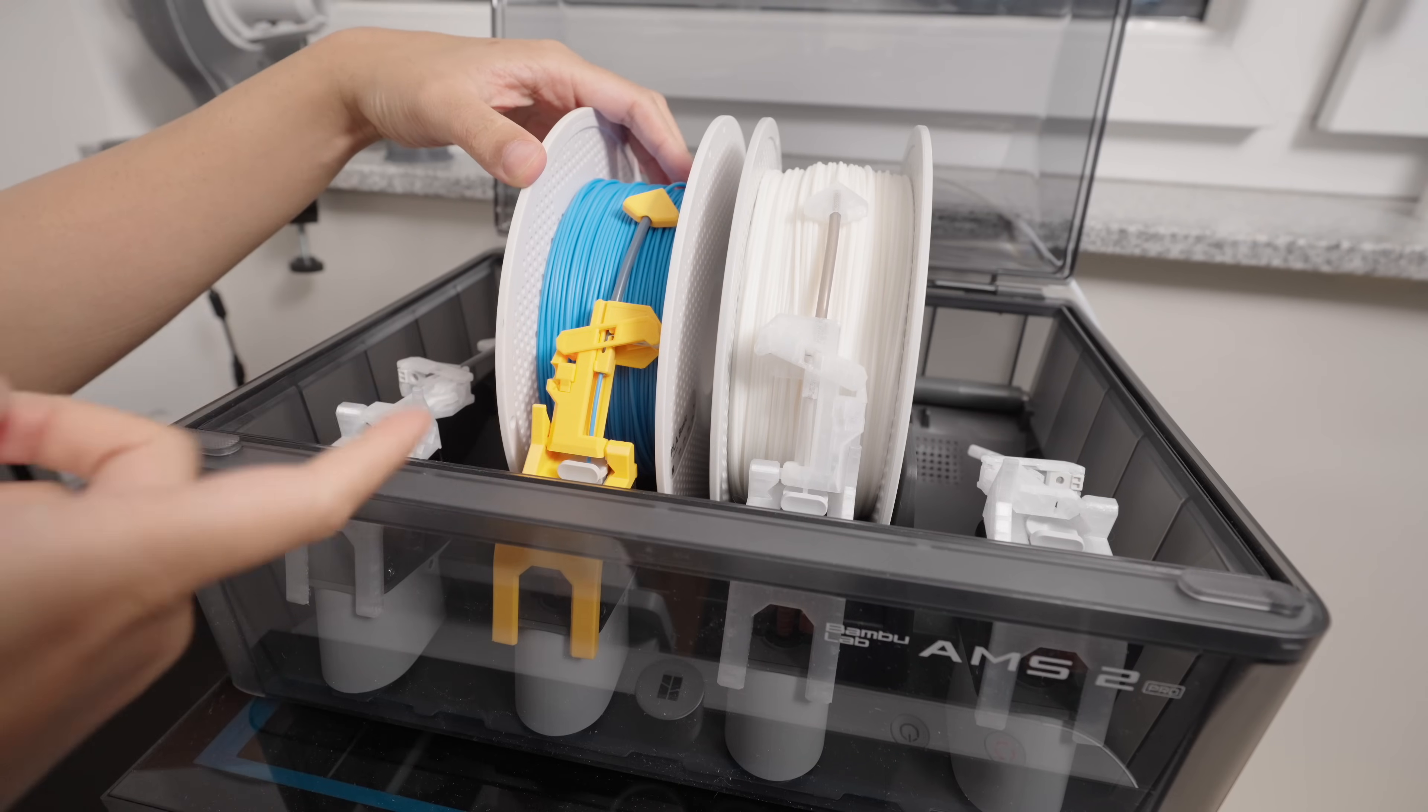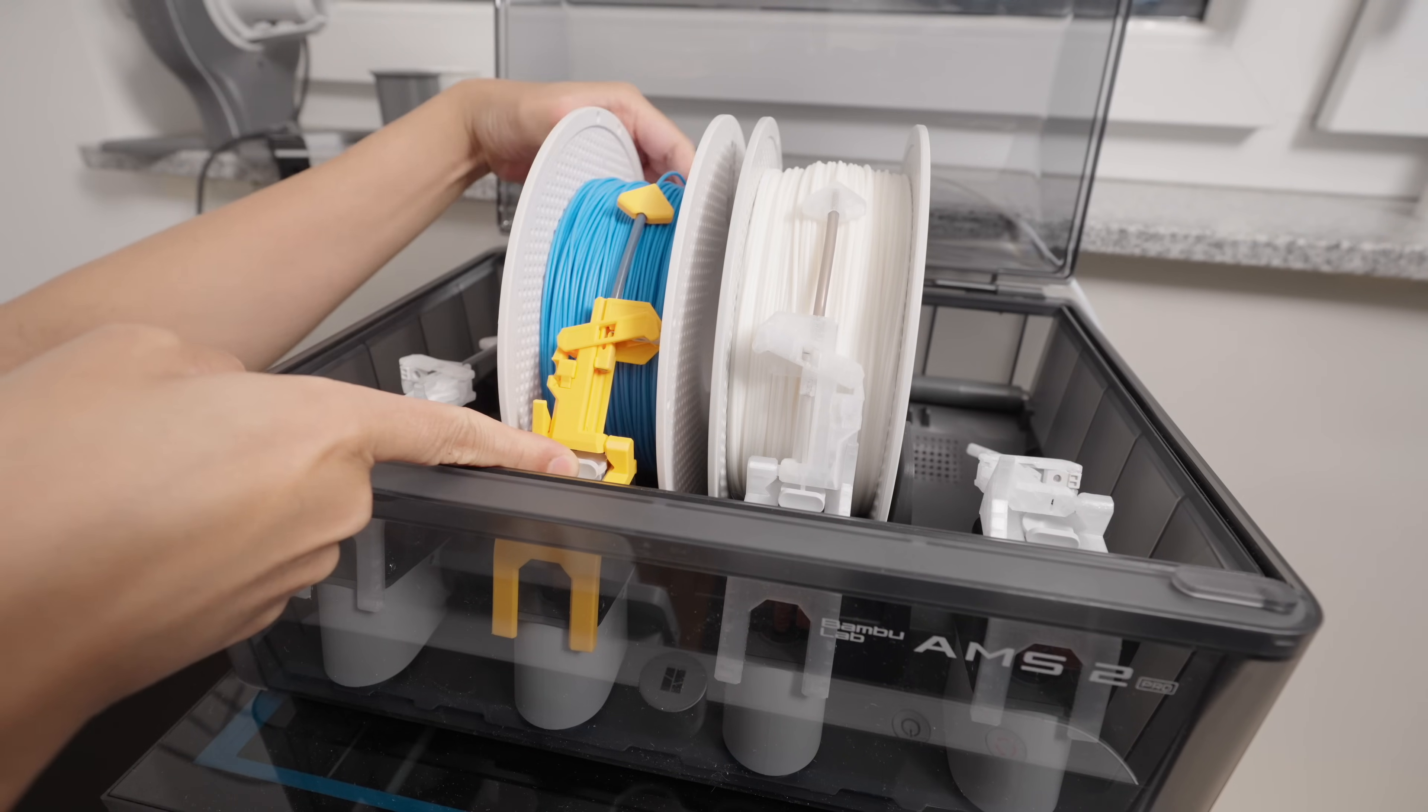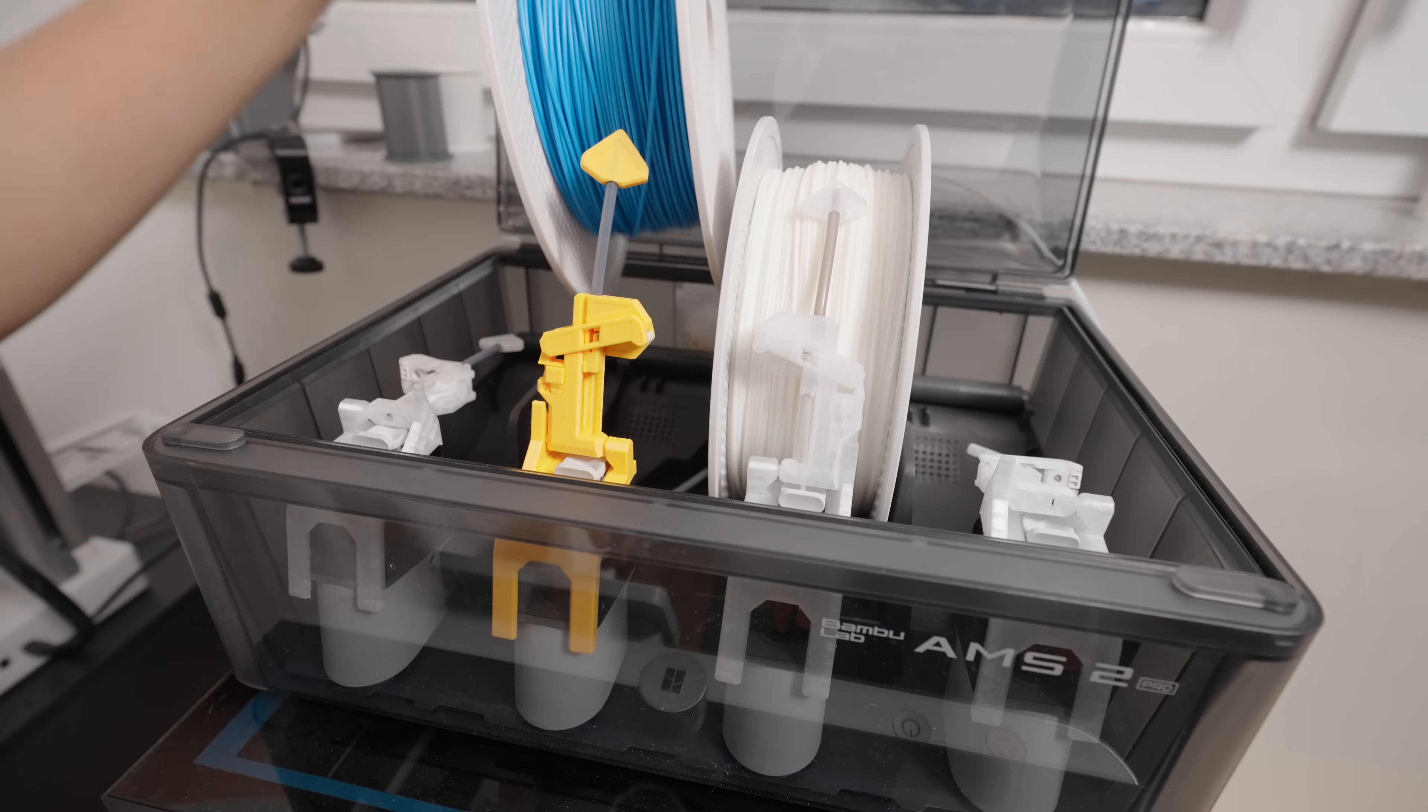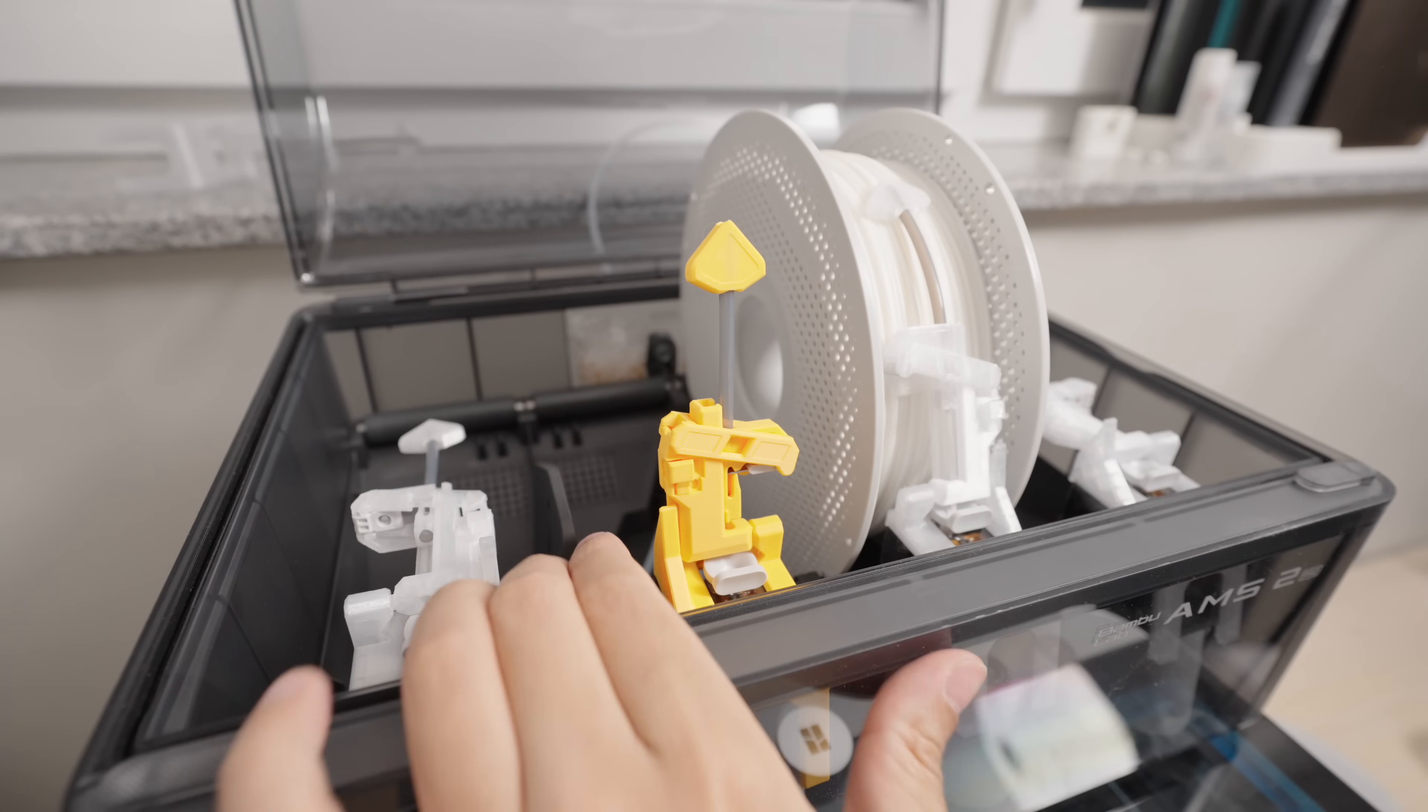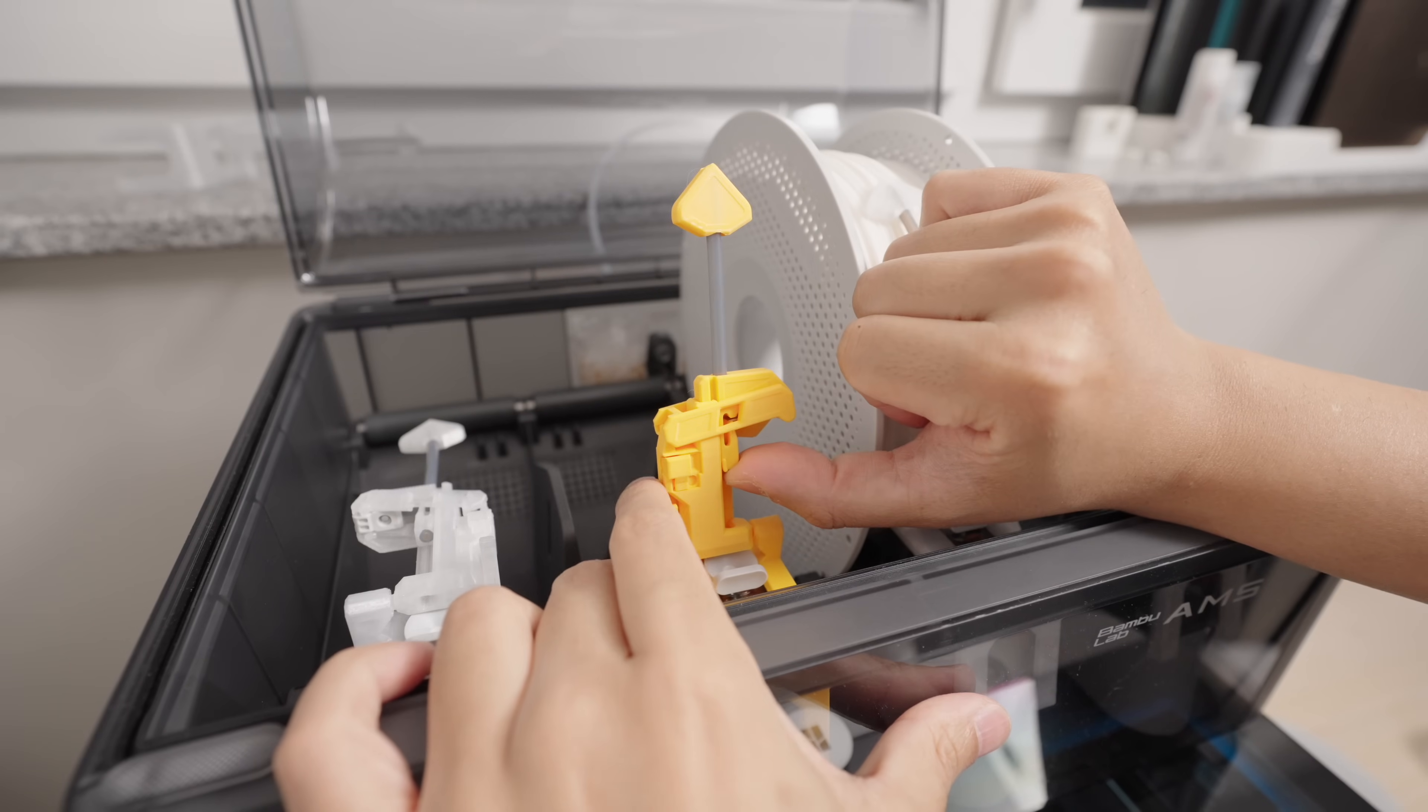To unload the filament there is no extra action necessary so just pull the filaments out while pushing the button forward like you normally would. Don't forget to reset the snack cutter by sliding the cutting mechanism upward until you hear a click.